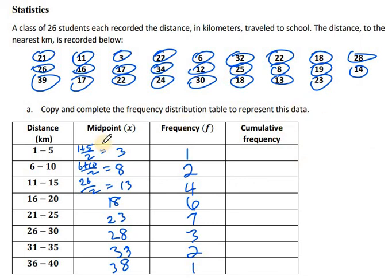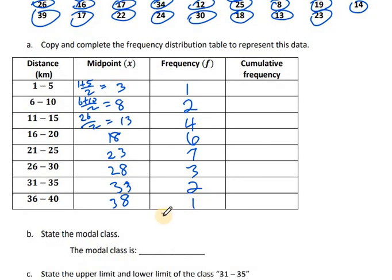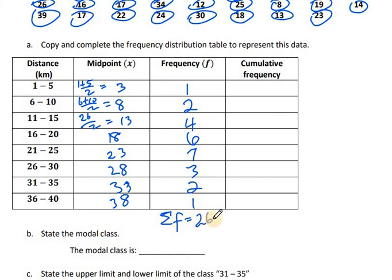When we add these frequencies up we should get the total number of persons. We're told there are 26 students. Using the sigma symbol for sum: 1 plus 2 is 3, plus 4 is 7, plus 6 is 13, plus 7 is 20, plus 3 is 23, plus 2 is 25, plus 1 is 26. So that's correct.